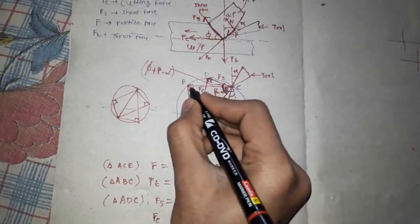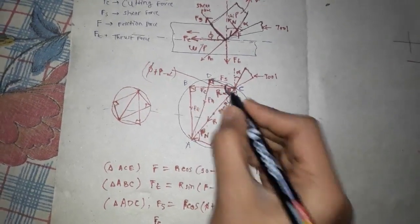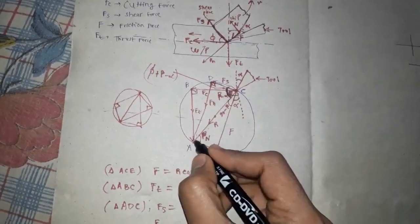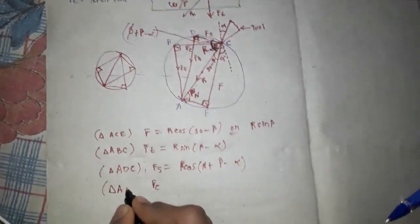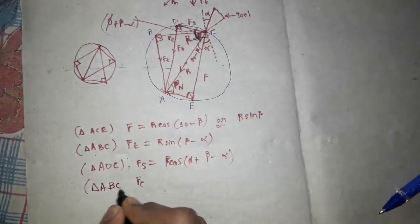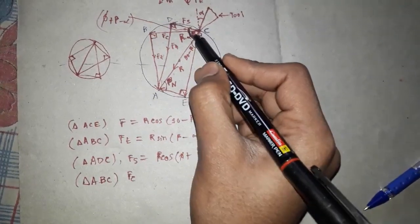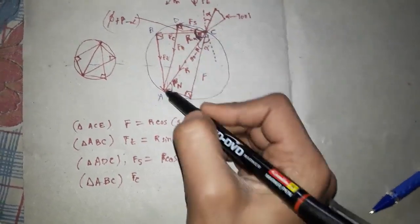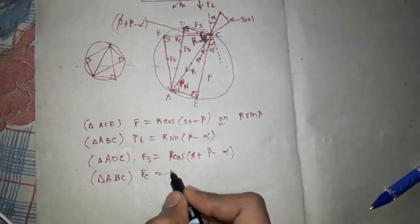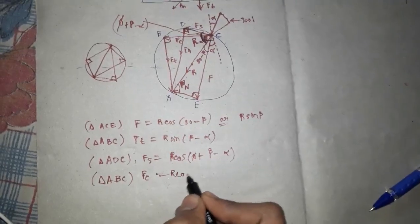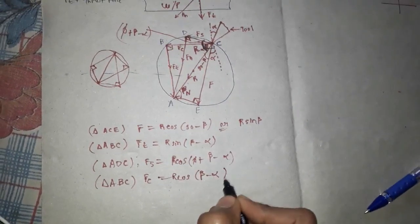Now for the cutting force — looking at triangle ABC, the cutting force equals R cos(β − α).